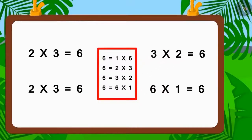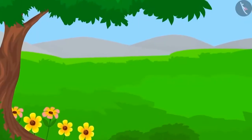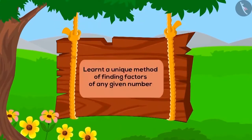By finding all the factors of six, we helped the villagers choose the right bus. Children, we can find the factors of any number using the multiplication table. Now, why don't you try finding the factors of the number eight with your friends? In this lesson we learned a unique method of finding factors of any number. In the next chapter, we will learn different ways to use these factors.